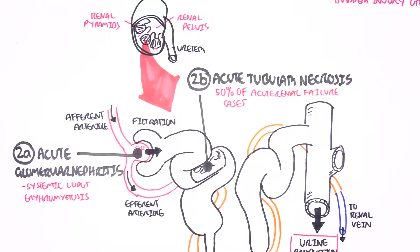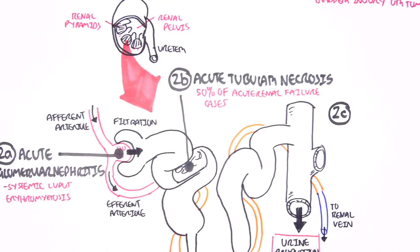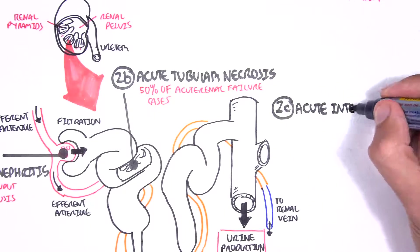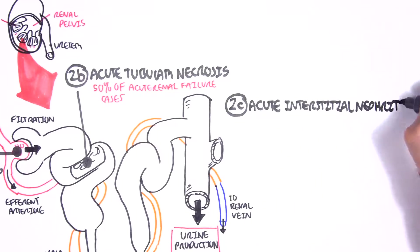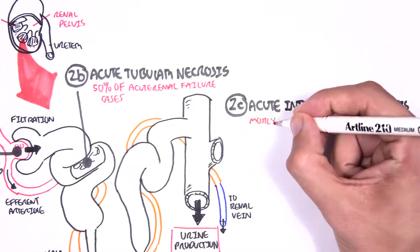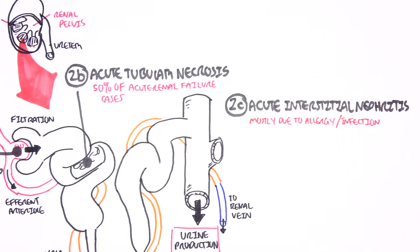Then we have acute interstitial nephritis, which is literally inflammation of the interstitial space in the kidneys. We see this mostly in allergic reactions as well as infection. Before we look at the fourth type of intra-renal cause of acute renal failure, we have to understand that pre-renal, intra-renal, and post-renal causes are all connected.